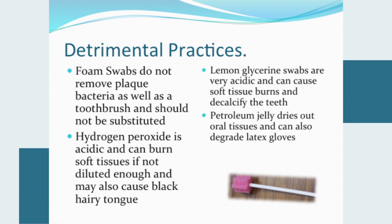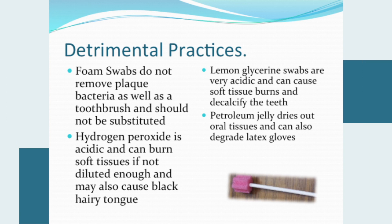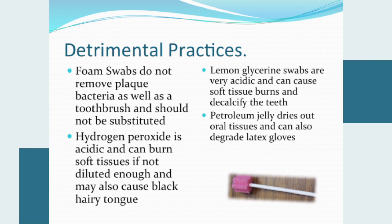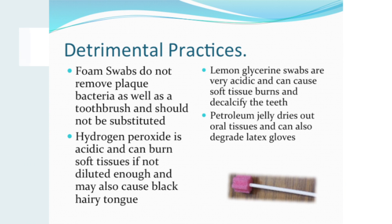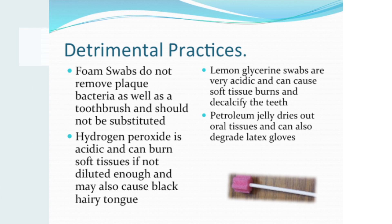Petroleum-based products should be avoided as they can dry tissues and are harmful if aspirated. Foam swabs or toothettes are commonly substituted for a toothbrush, but they do not remove plaque, bacteria, or clean teeth like a toothbrush and should not be substituted for one; they are useful only for application of mouth rinses or lubricating agents. Hydrogen peroxide is acidic and can burn soft tissues if not diluted enough, and may cause black hairy tongue. Lemon glycerin swabs are very acidic, can cause soft tissue burns, and demineralize the teeth.